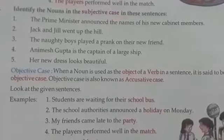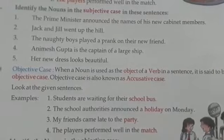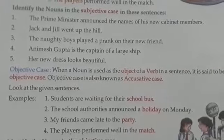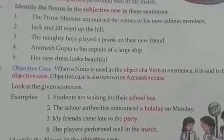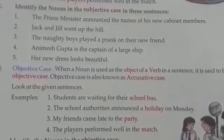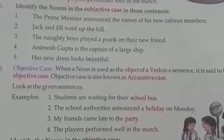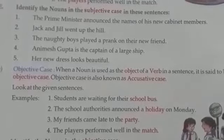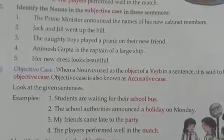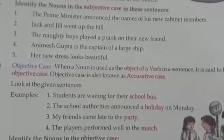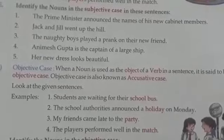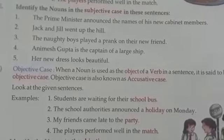'My friends came late to the party.' Here, 'my friends' is the subject, 'came' is the verb, and 'late' is an adverb which we will discuss later. 'To the party' is the object, so 'party' is a noun used in the objective case.